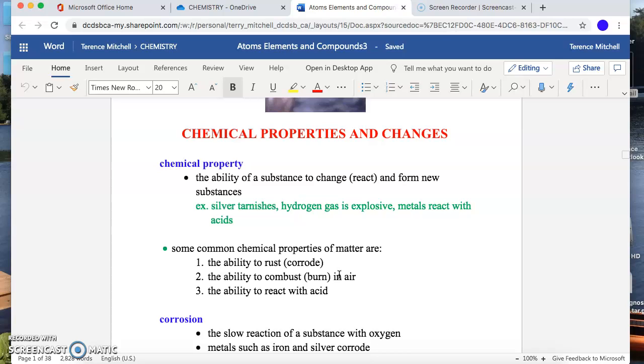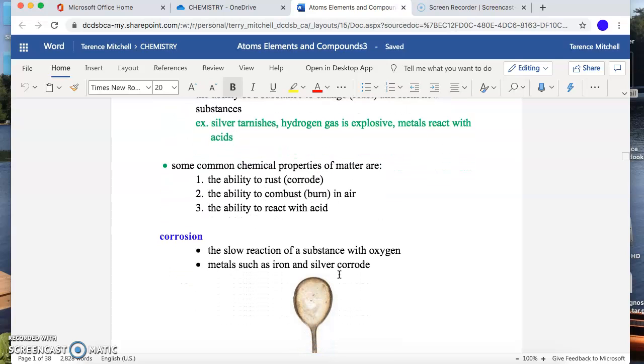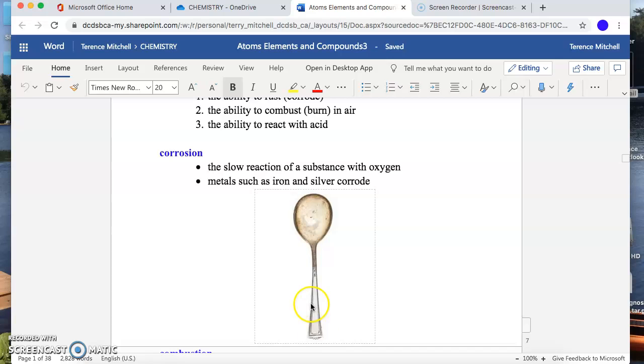So some common chemical properties: rusting or corroding, to combust or burn is a chemical property, and reacting with acid is a chemical property. Corrosion is a slow reaction where oxygen in the air and the metal react with each other and we get something new. Unlike when we rip the piece of paper in half, we got nothing new. We get something new here. So you can see the silver here, it's been cleaned off, but up here that silver is not as luscious, it's not as shiny anymore because it's got this black coating on it, that tarnish. And that is a whole new product. The silver atoms and the oxygen atoms came together, they reacted, and they created something new, tarnish.